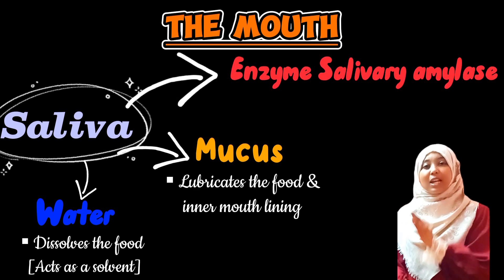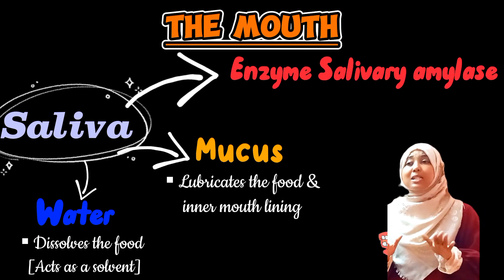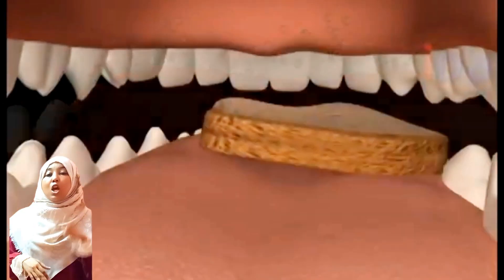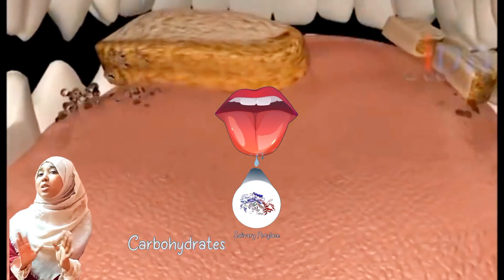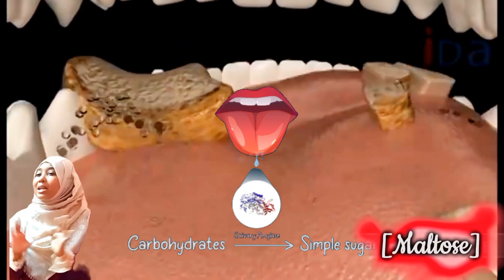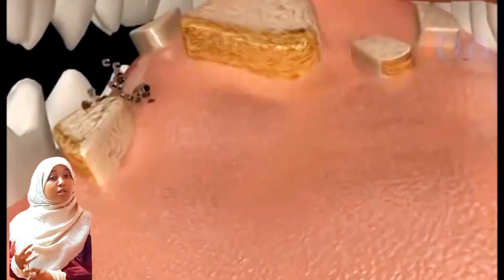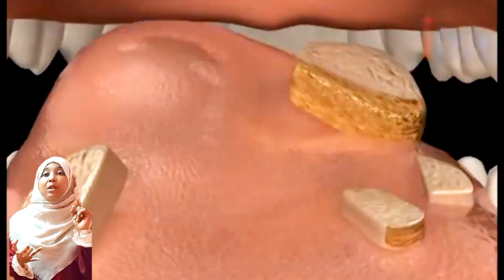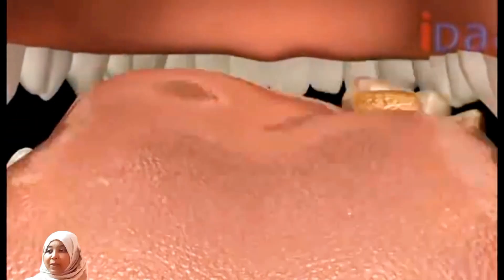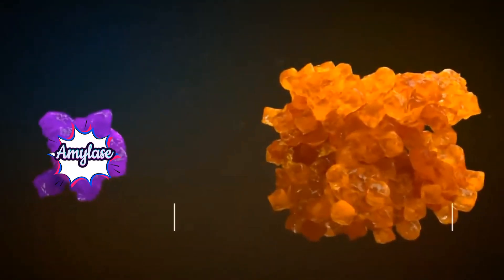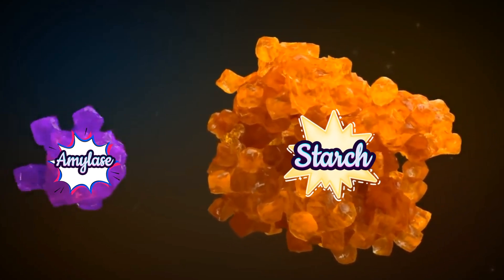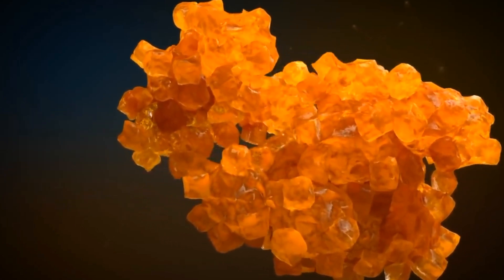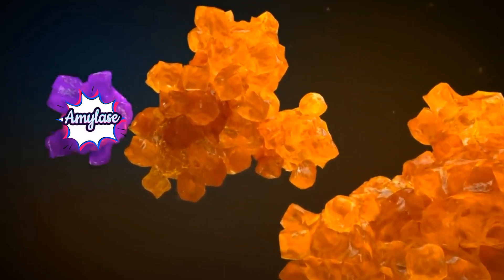Salivary amylase breaks down starch to maltose. In the mouth, only the chemical digestion of starch takes place — there is no chemical breakdown of protein or lipids, only starch. As a tip: whenever you see an enzyme with the name amylase, remember it acts on starch and breaks it down to form maltose.